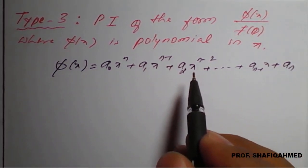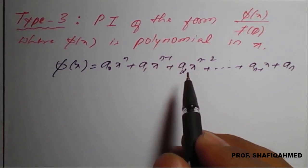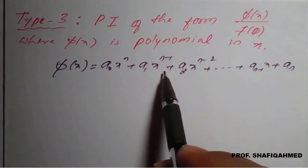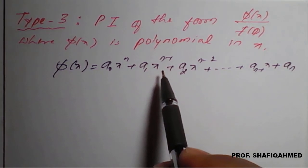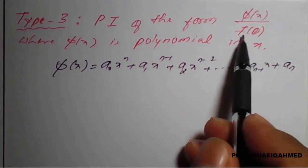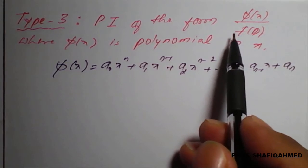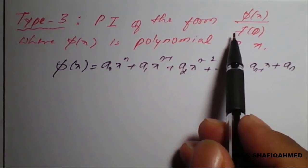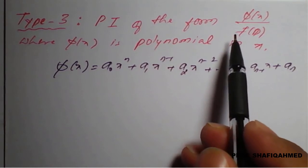Here yp will be a polynomial in x. Hence PI is found by division — we get a polynomial by writing φ(x) in descending power of x and f(D) in descending order, so that the division gets completed without any remainder. The quotient so obtained in the process of division will be the particular solution.